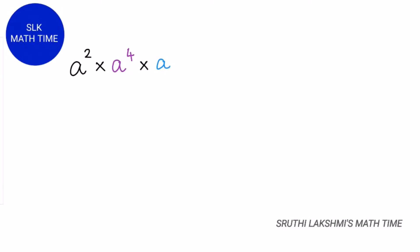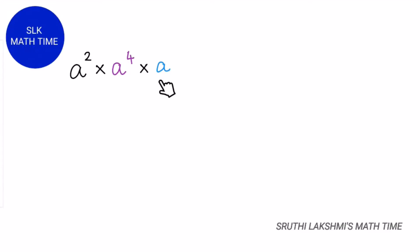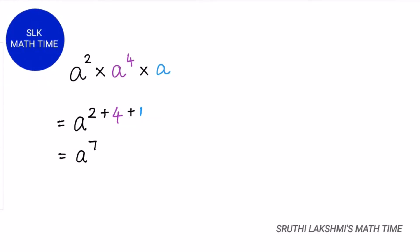Let's see another example: a power 2 into a power 4 into a. Here the common base is a. We just add the exponents. But what about this a? It doesn't have an exponent. Always remember that a base without an exponent has an invisible exponent of 1, so it's basically a power 1. So we add 2 plus 4 plus 1, which gives us 7 — so it's a power 7.